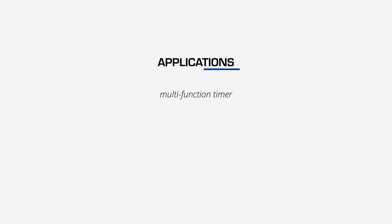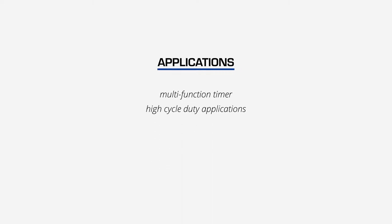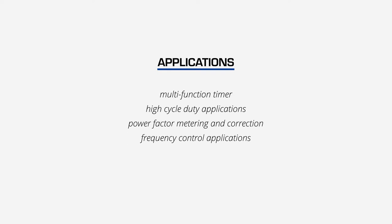Electronic timing relays are used in a number of applications such as a multi-function timer, which allows users to adjust between multiple timing functions, high cycle duty applications, power factor metering and correction, and frequency control applications, to name just a few.